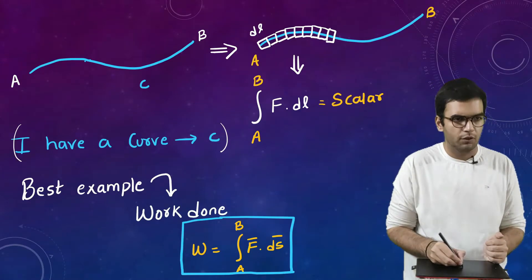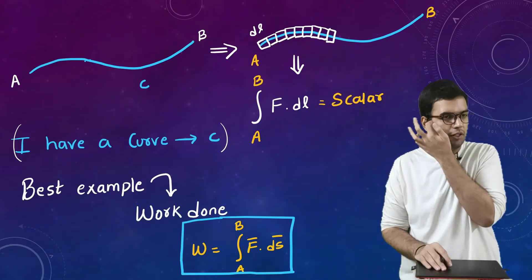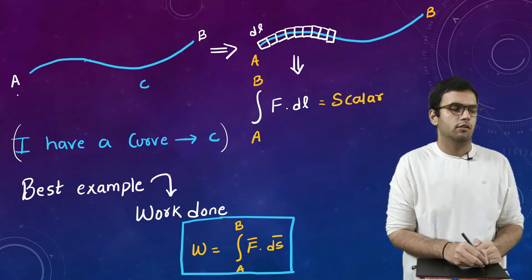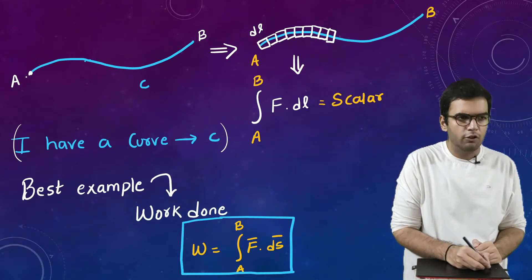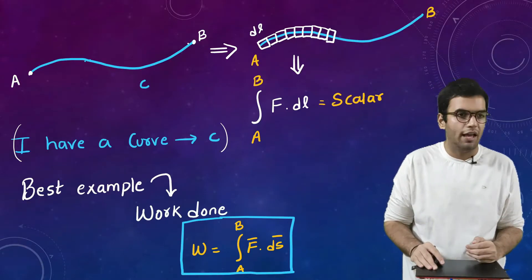So consider I have a curve because the curve is somewhat similar to a line in the geometric sense. So suppose I have a curve whose name is C. Now I name the initial point of the curve as A, I label the final point of the curve as B.